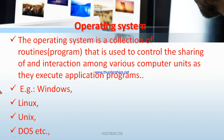An operating system is a collection of routines or programs used to control the sharing of and interaction among various computer units as they execute application programs. Simply put, it is the interface between software and hardware. Examples of operating systems include Windows, Linux, Unix, and DOS.